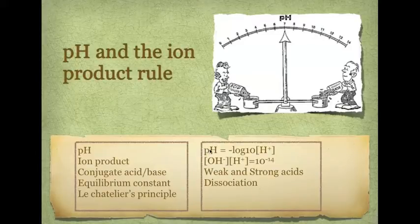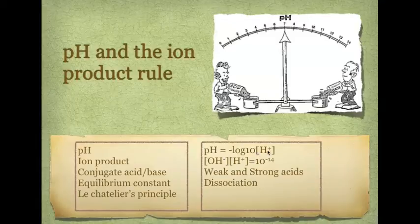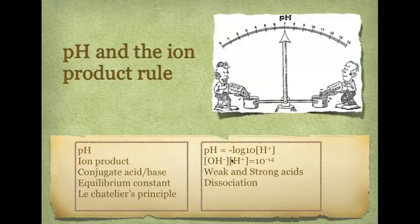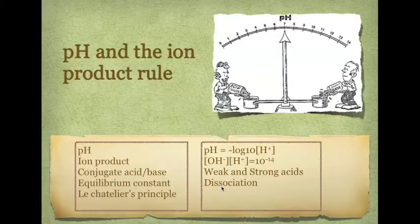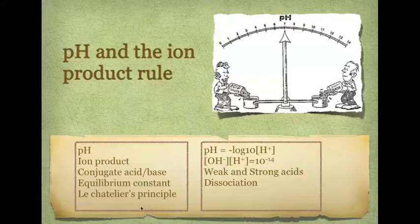So, you need to know your pH calculation here. pH equals negative log to the base 10 of hydrogen ions or hydronium. And you need to know this ion product rule where you have hydroxide times hydrogen gives you 10 to the negative 14, and that should be molar squared, a unit with that as well. You need to know what strong acids and weak acids are, and you need to know about dissociation, how acids dissociate. But that's your prior knowledge that you should understand and you should be able to use that.